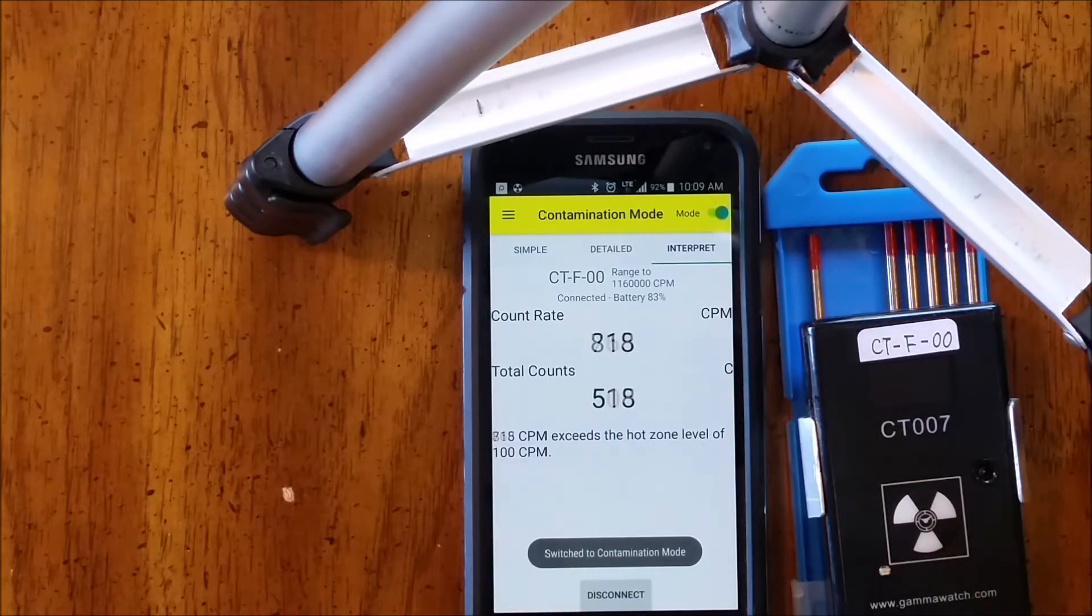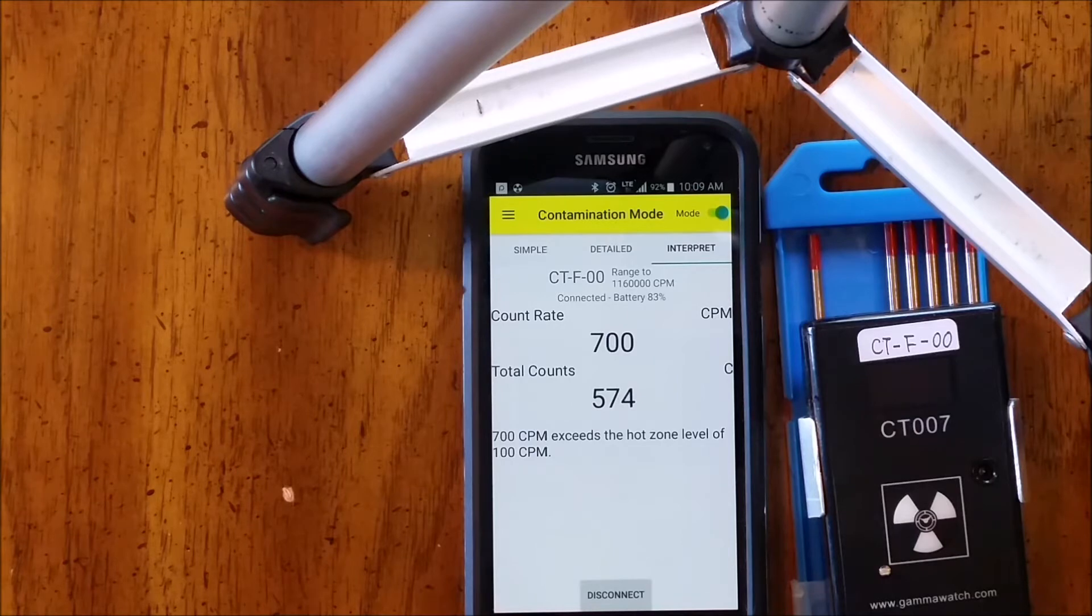And in contamination mode, it tells us that this would be enough loose contamination that we should worry about spreading this around. It says it's exceeding our level of 100 CPM. In the settings menu, we can change the units.